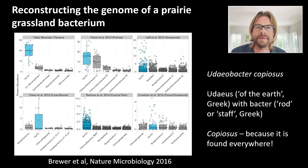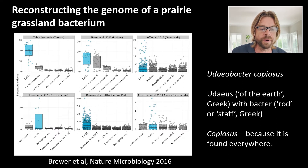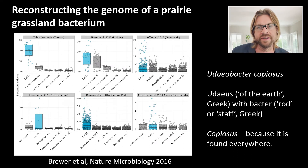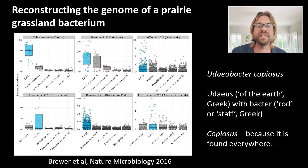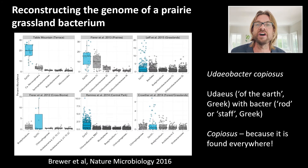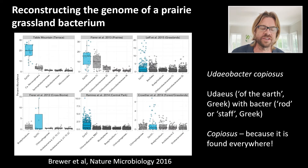When we mapped metagenomic reads back against this genotype, we were able to identify this organism in Table Mountain soils, in our prairie paper, in grasslands around the planet, even in Central Park. This was one of the most predominant bacteria associated with grassland sites that hadn't undergone agricultural revolution, or which had been reclaimed and no longer had nitrogen fertilizers being added. This suggests that this bacteria is uniquely associated with prairie grasses all over the world, suggesting some kind of ancient symbiotic relationship.